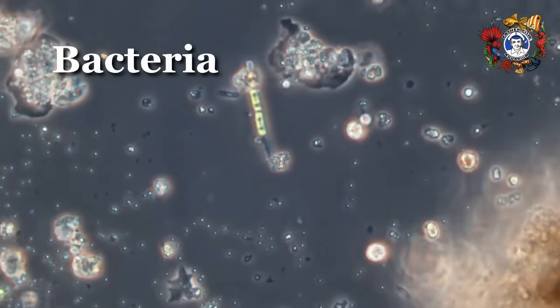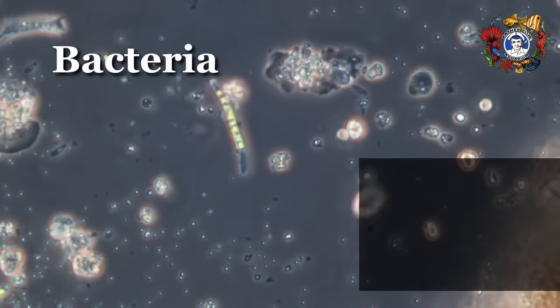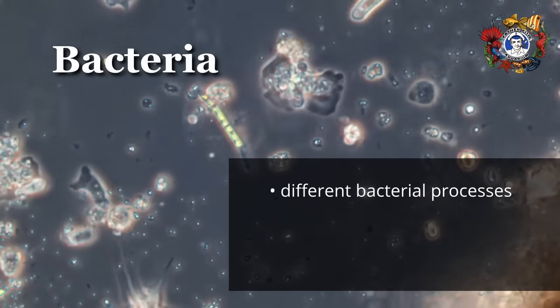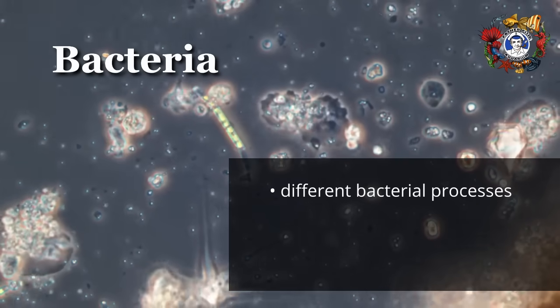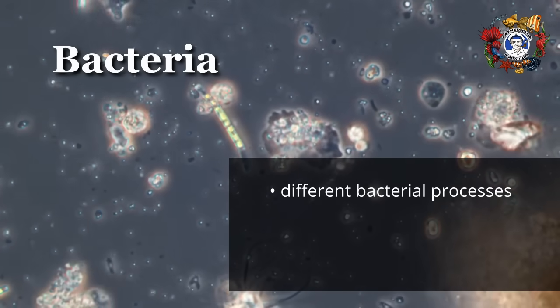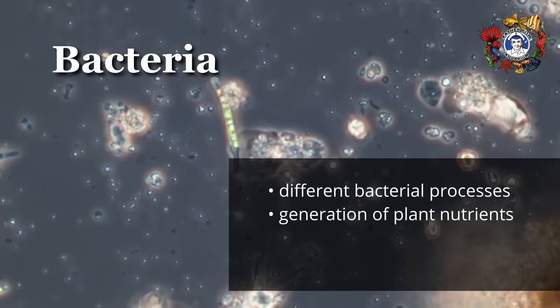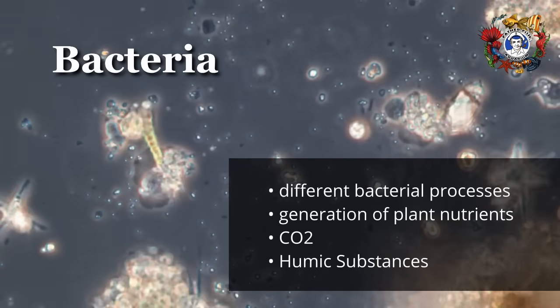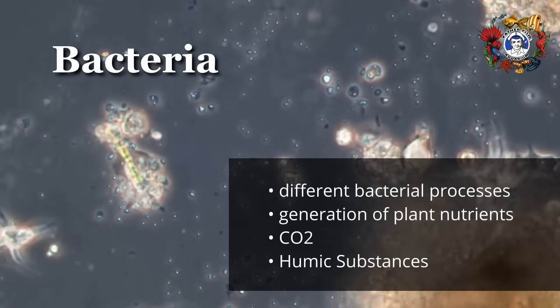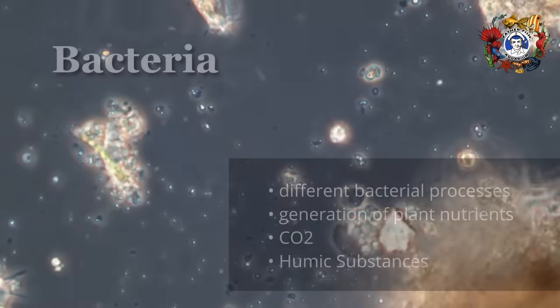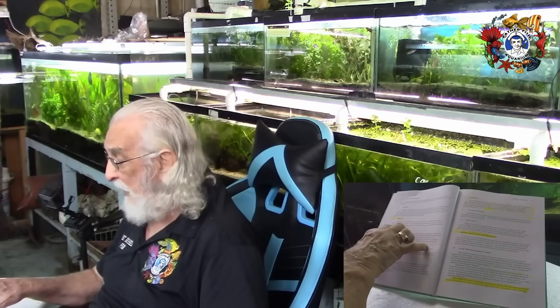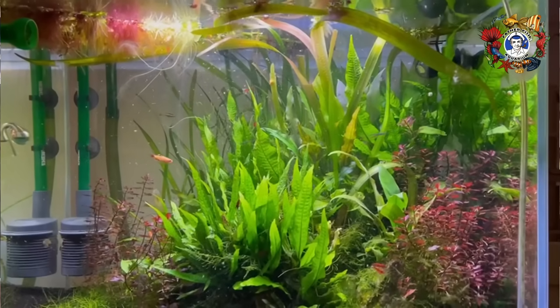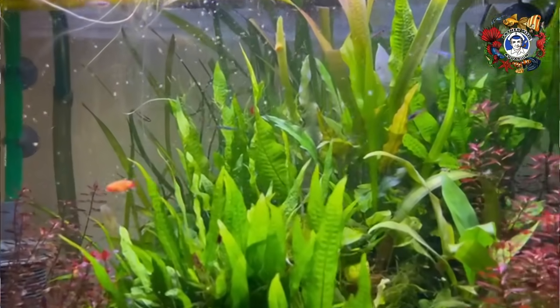Point two: bacteria. Chapter four classifies different bacterial processes in terms of their positive and negative impacts on the aquarium. Topics include the generation of plant nutrients, CO2, and humic substances — that's plant substances — by heterotrophic bacteria. In addition, it explains how bacterial processes both create and destroy aquarium toxins. She discusses the sources of plant nutrients and specifically carbon.